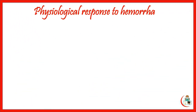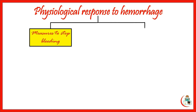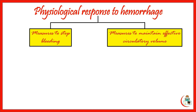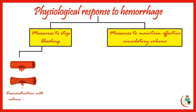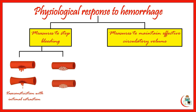Physiological response to hemorrhage includes measures to stop bleeding and measures to maintain effective circulatory volume. When injured, vessels undergo vasoconstriction with endothelial retraction, trying to stop the bleeding. Platelets adhere to the injured vessel and a fibrin clot forms. The trial at restoration of blood volume occurs through sympatho-adrenal stimulation.